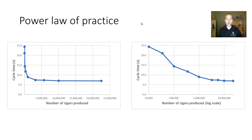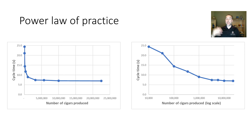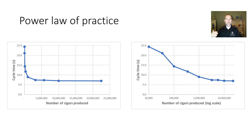We call this the power law of practice, and we see the same thing when studying for a class. If you put in 10 hours and bump from 50% to 70%, another 10 hours won't give you the same jump — maybe from 70% to 80%. Another 10 hours and you probably only go from 80% to 85%. There are always diminishing returns.